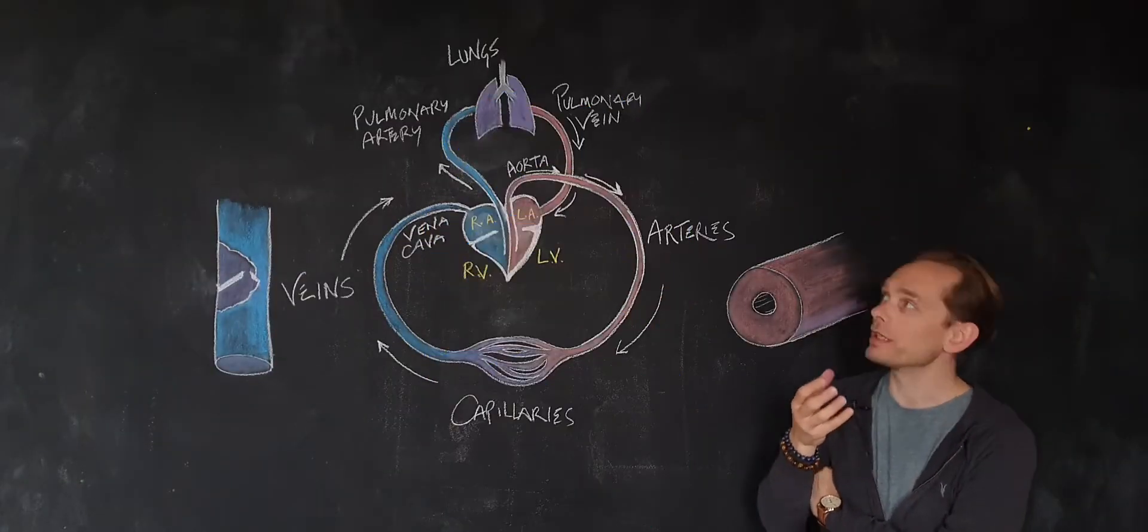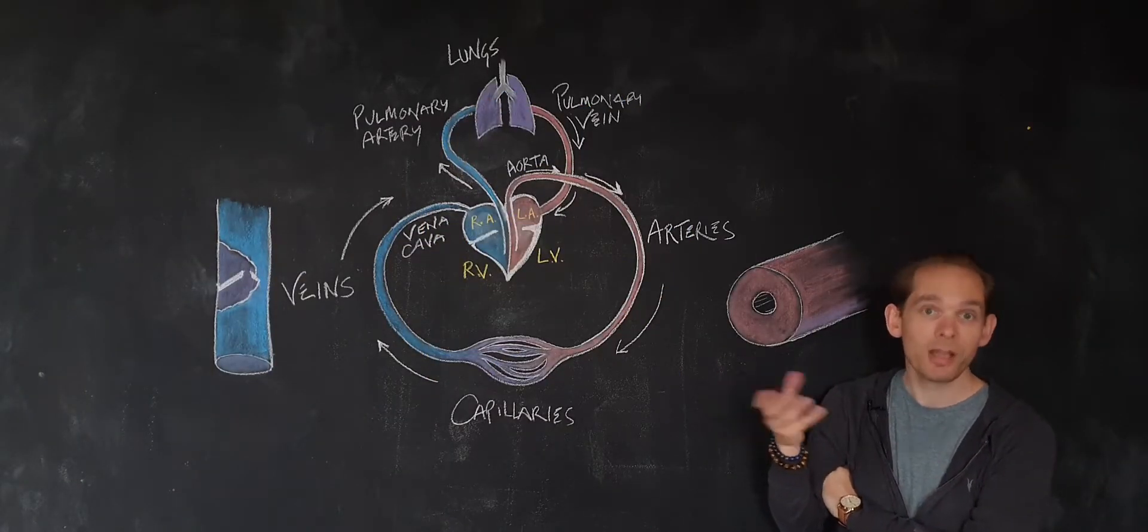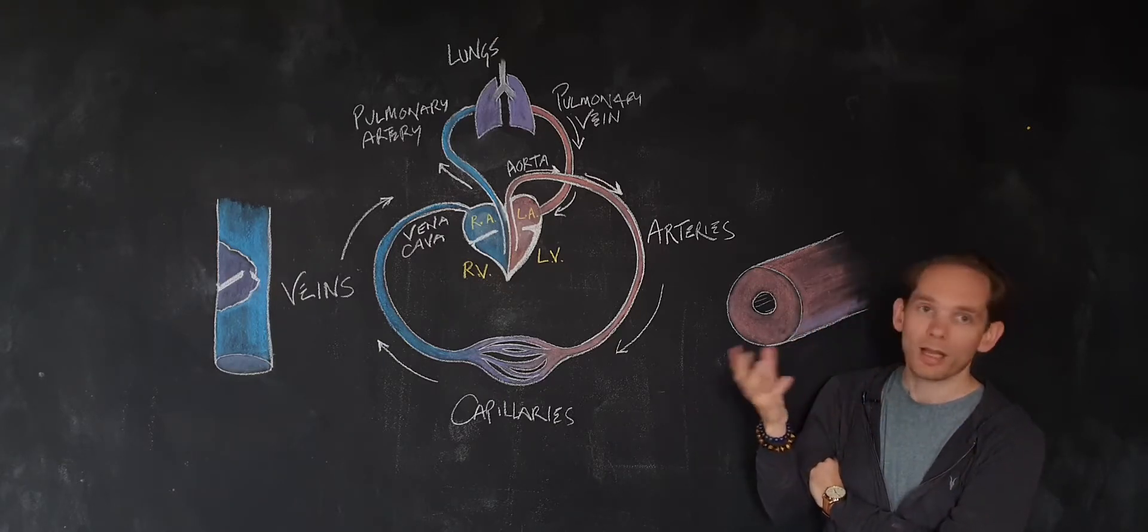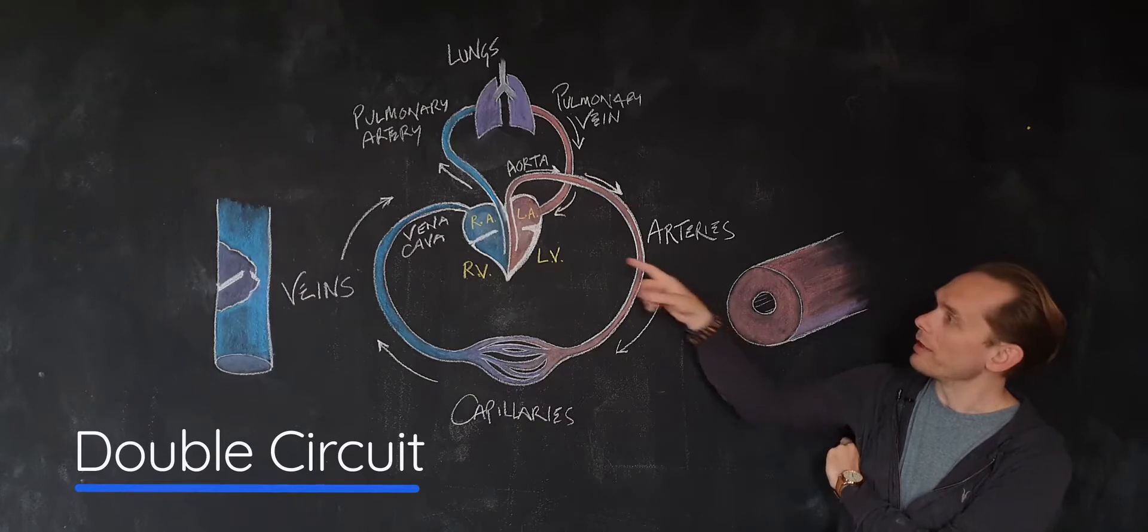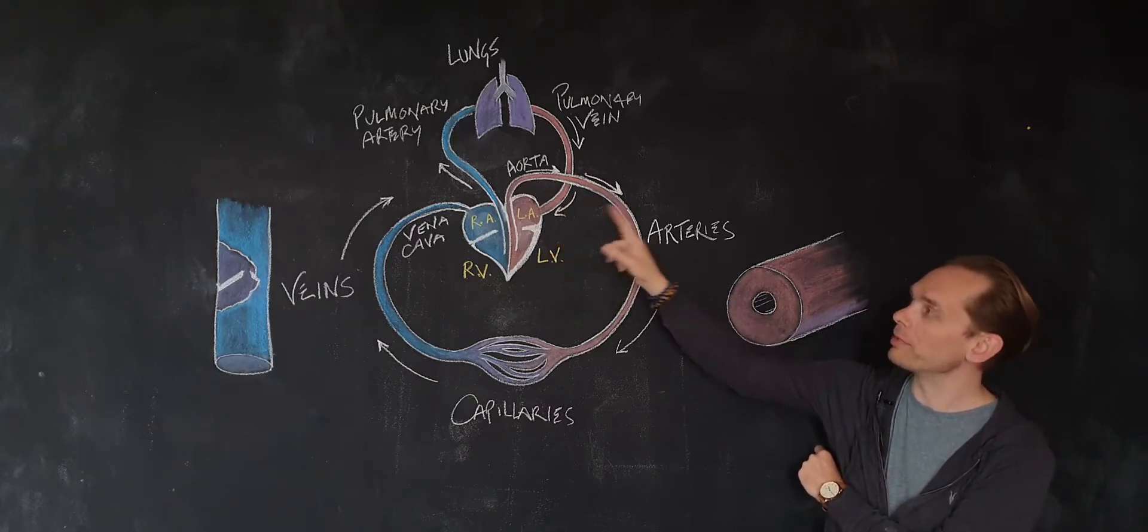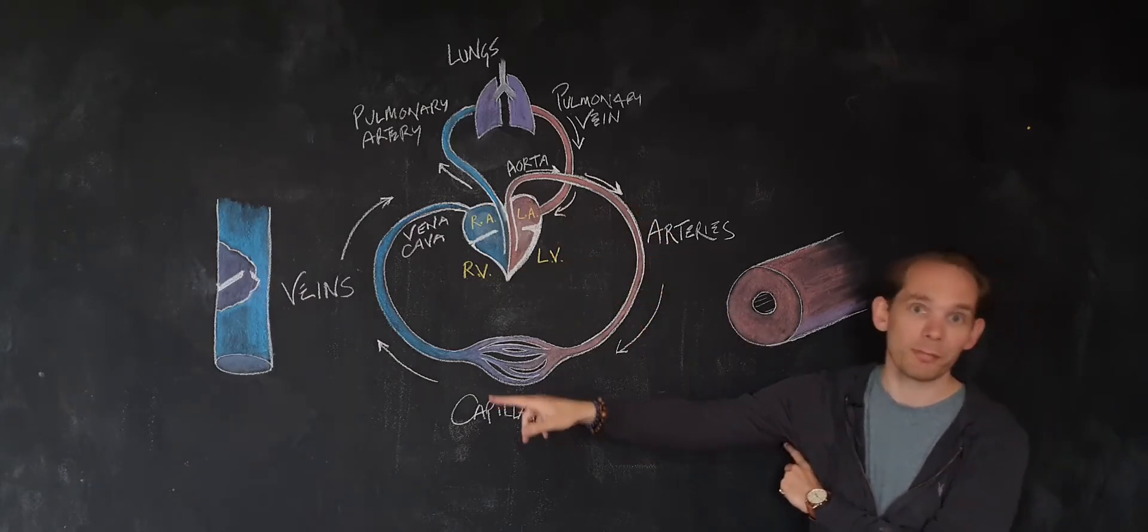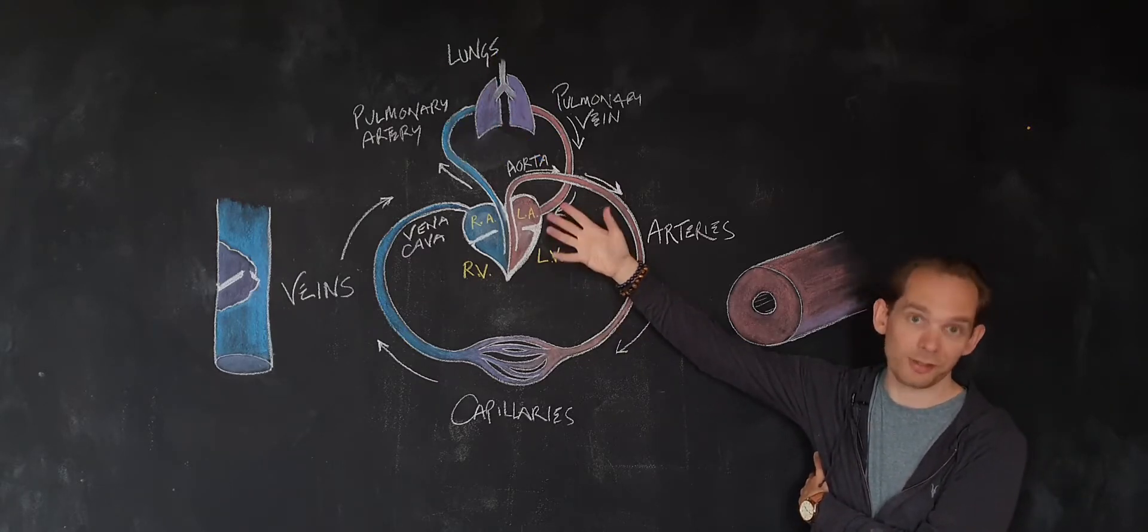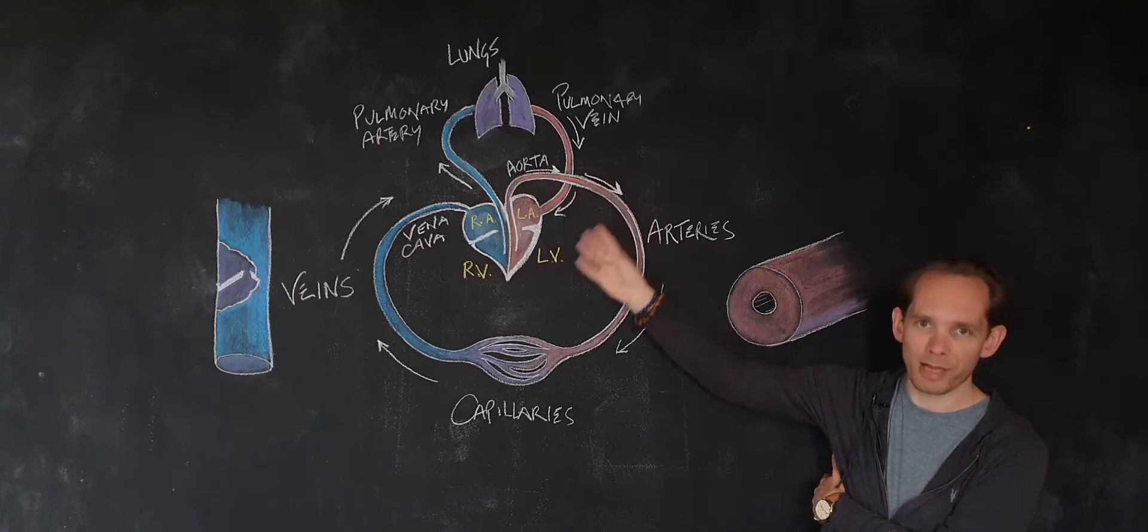Hello, this video is about the double circulatory system found in all mammals, including humans. This double circuit is one where the heart pumps blood to the body and brings it back, and then the second circuit pumps blood to the lungs to get oxygen and exchange gases, then brings it back.